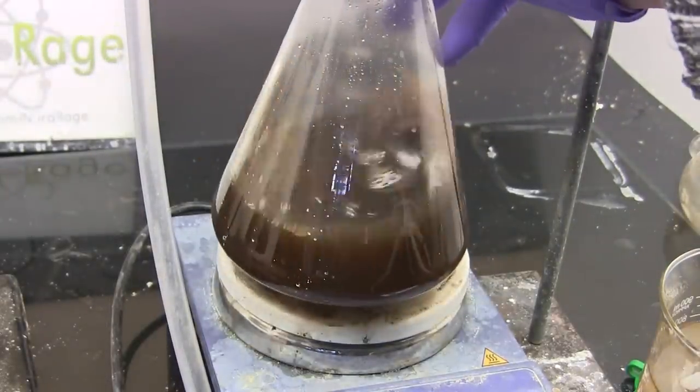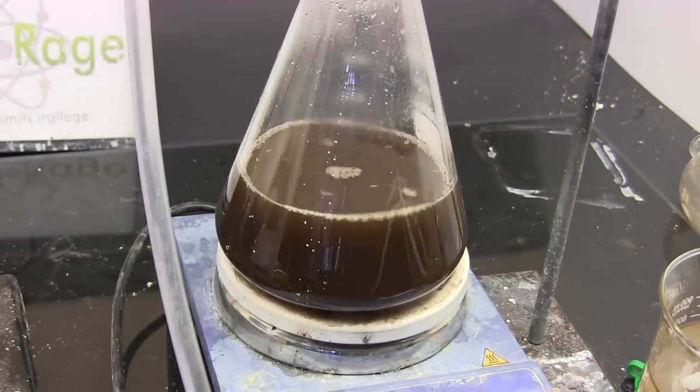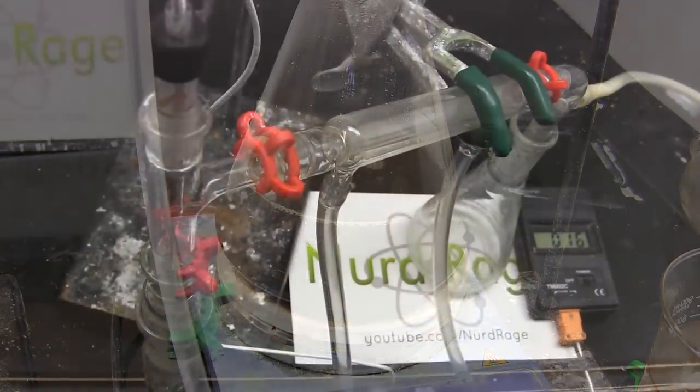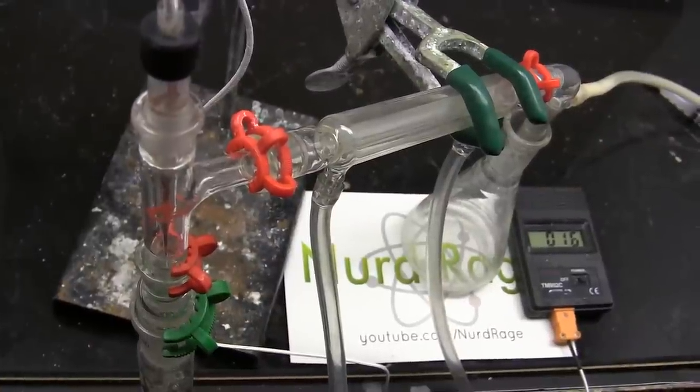And here we are, our washed mixture of crude chlorotoluenes, byproducts and unreacted toluene. To separate it we're going to use our least favorite technique, fractional distillation.